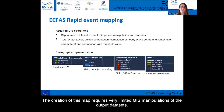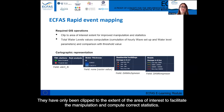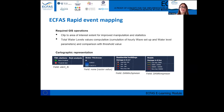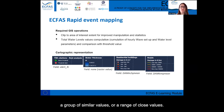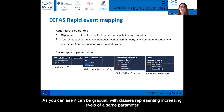The creation of this map requires very limited GIS manipulations of the output datasets. They have only been clipped to the extent of the area of interest, to facilitate the manipulation and compute correct statistics. Their presentation mostly uses a classified symbology, which means that all the features in the layer are displayed in a color that represents a group of similar values or a range of close values. As you can see, it can be gradual, with classes representing increasing levels of the same parameter.